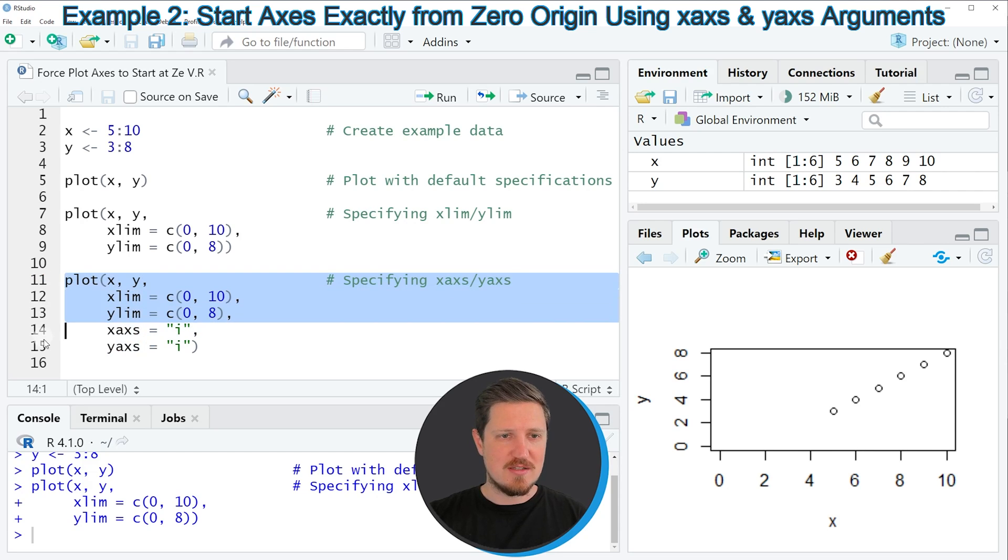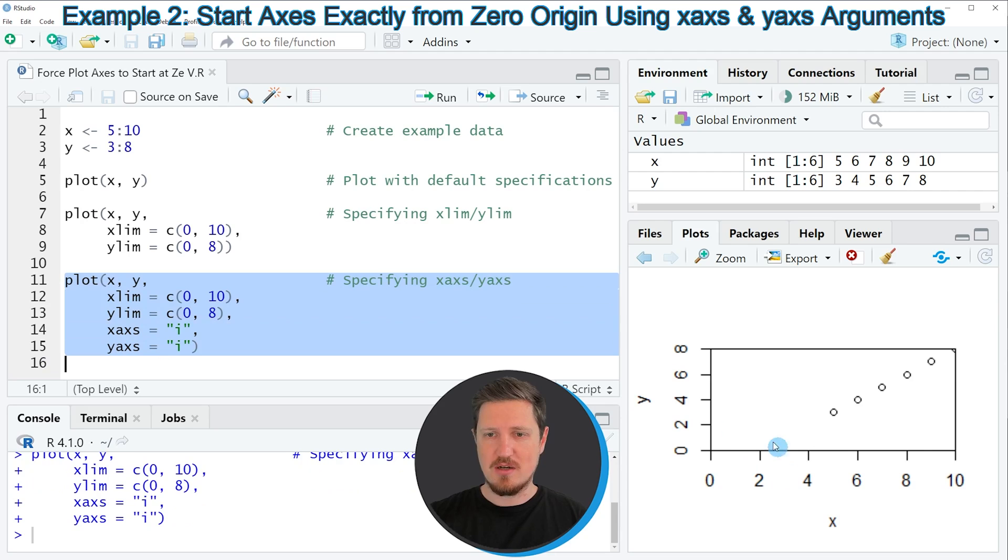If you run lines 11 to 15 you can see at the bottom right that our plot is updated once again and this time our axis start exactly at 0 and this small corner at the bottom left has been removed.